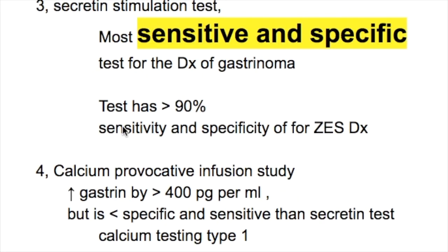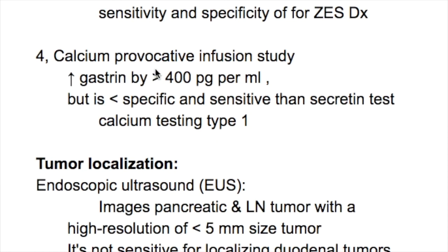The secretin stimulation test is the most sensitive and specific test for the diagnosis of gastrinoma, with more than 90% sensitivity and specificity for ZES. The calcium provocative infusion study increases gastrin by 400 pg/mL but is less specific and less sensitive than the secretin test; however, it is useful for MEN type 1 patients because of parathyroid gland tumors.